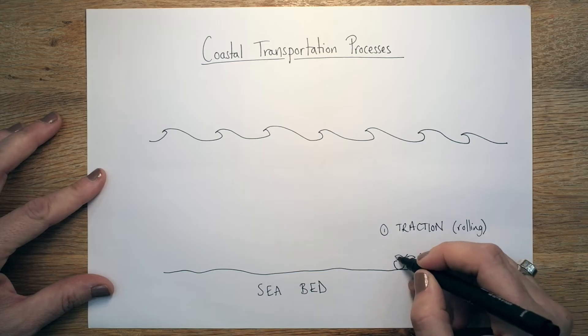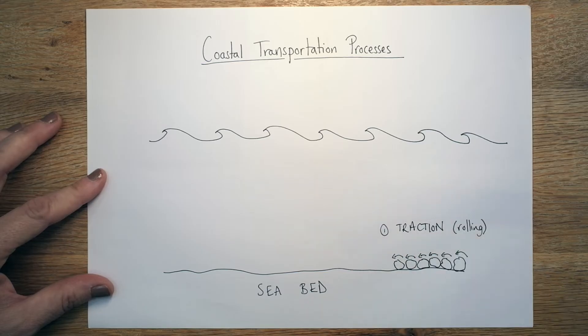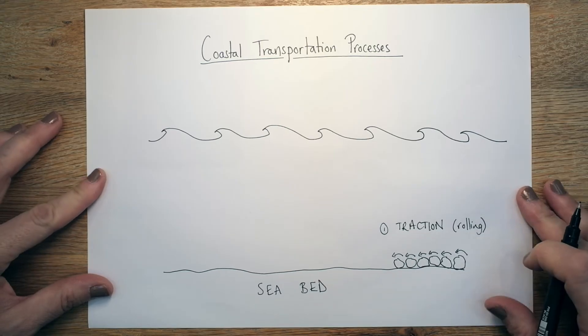So they are basically rolled along the bottom of the seabed. And that rolling process could be quite gentle, could be quite violent, but it inevitably moves them. And that might be in the direction of longshore drift, or it could just be with the tide, but it's traction, which is rolling.